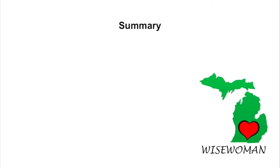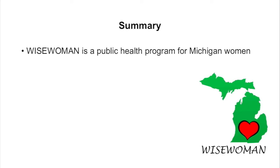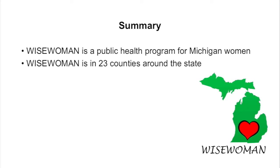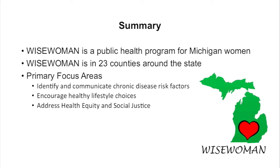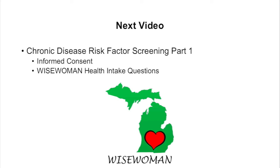So this video is at an end. In summary, Wise Woman is a public health program for Michigan women in 23 counties around the state. Our primary focus areas are to identify and communicate chronic disease risk factors, encourage healthy lifestyle choices, and address health equity and social justice. The next video will be chronic disease risk factor screening part one, covering informed consent and the Wise Woman health intake questions. Thank you.